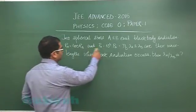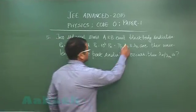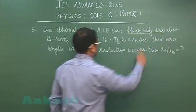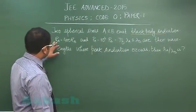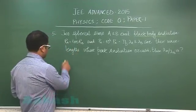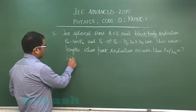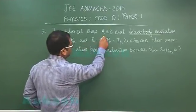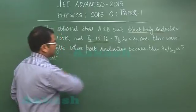It says two spherical stars A and B emit black body radiation and that has been given radius of A is 400 times radius of B. And the power emitted by A is 10 raised to the power 4 times power emitted by B.